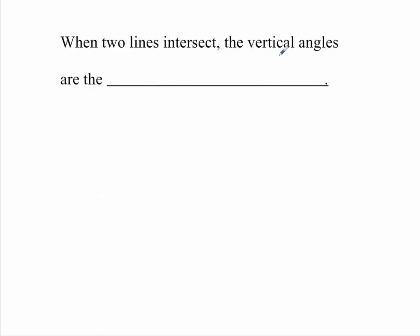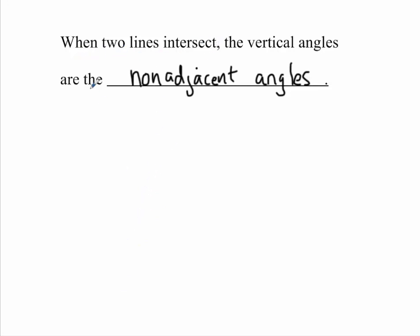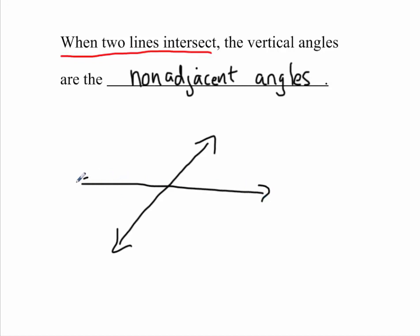When two lines intersect, the vertical angles are the non-adjacent angles. So let's just take a look at what we're talking about. When two lines intersect — here's one line, then I draw another line, and they're intersecting. When two lines intersect, the vertical angles are the non-adjacent angles.